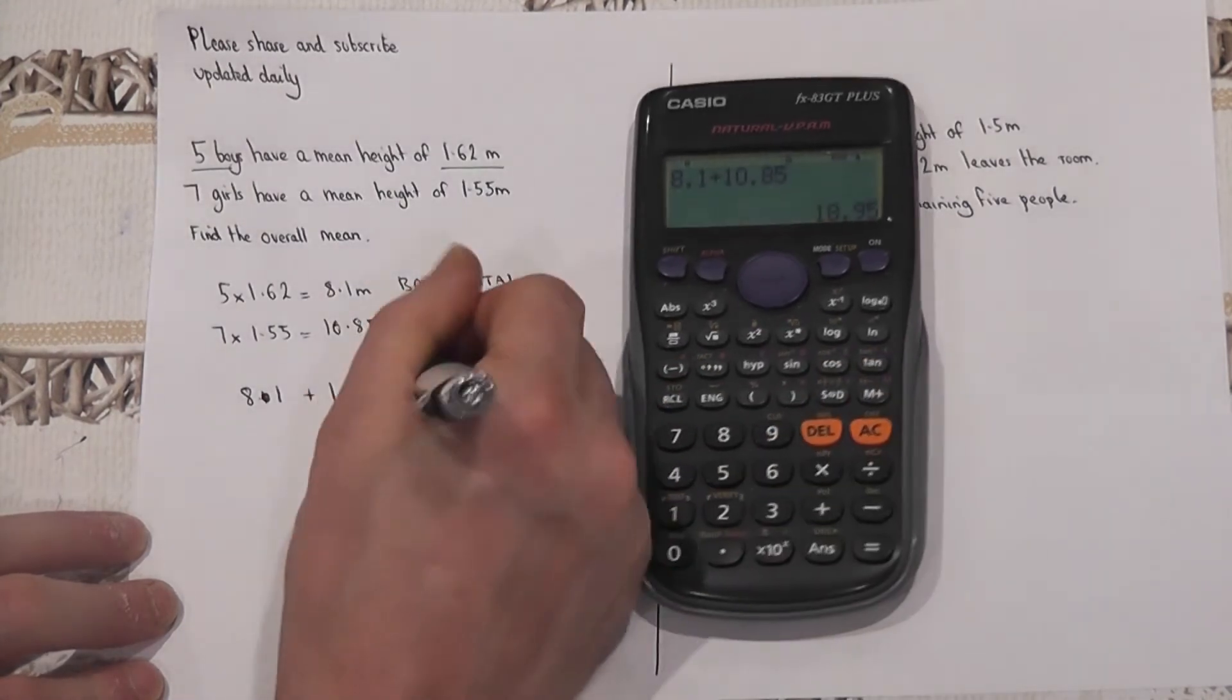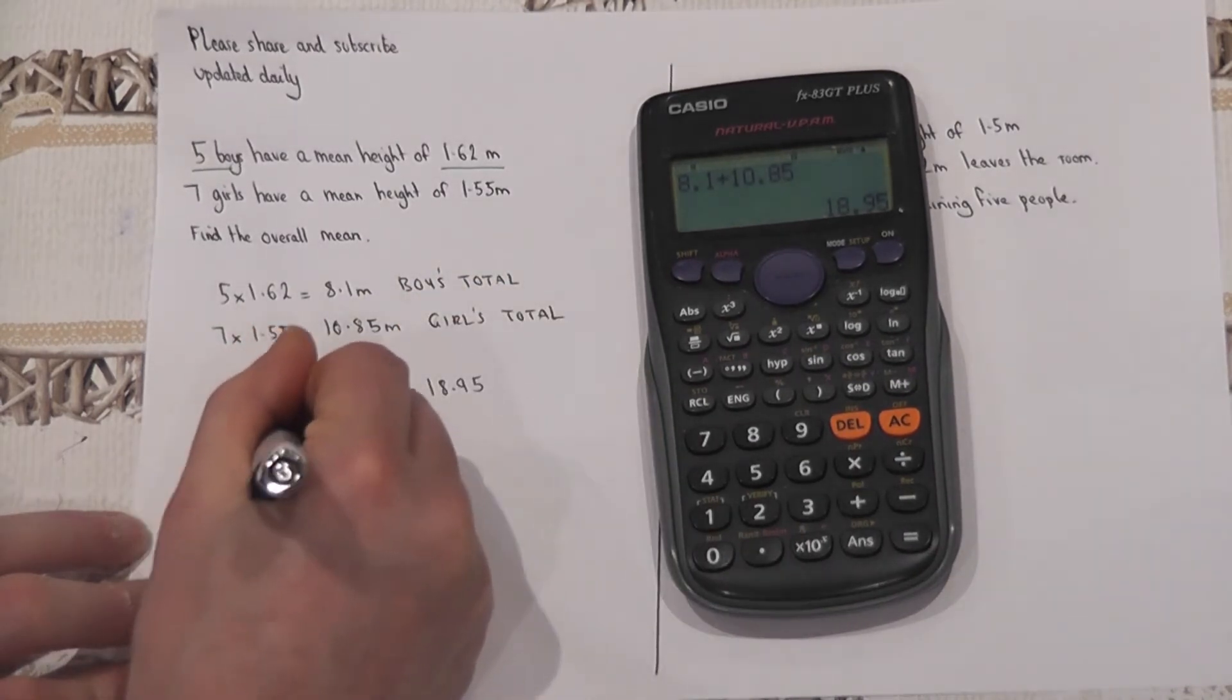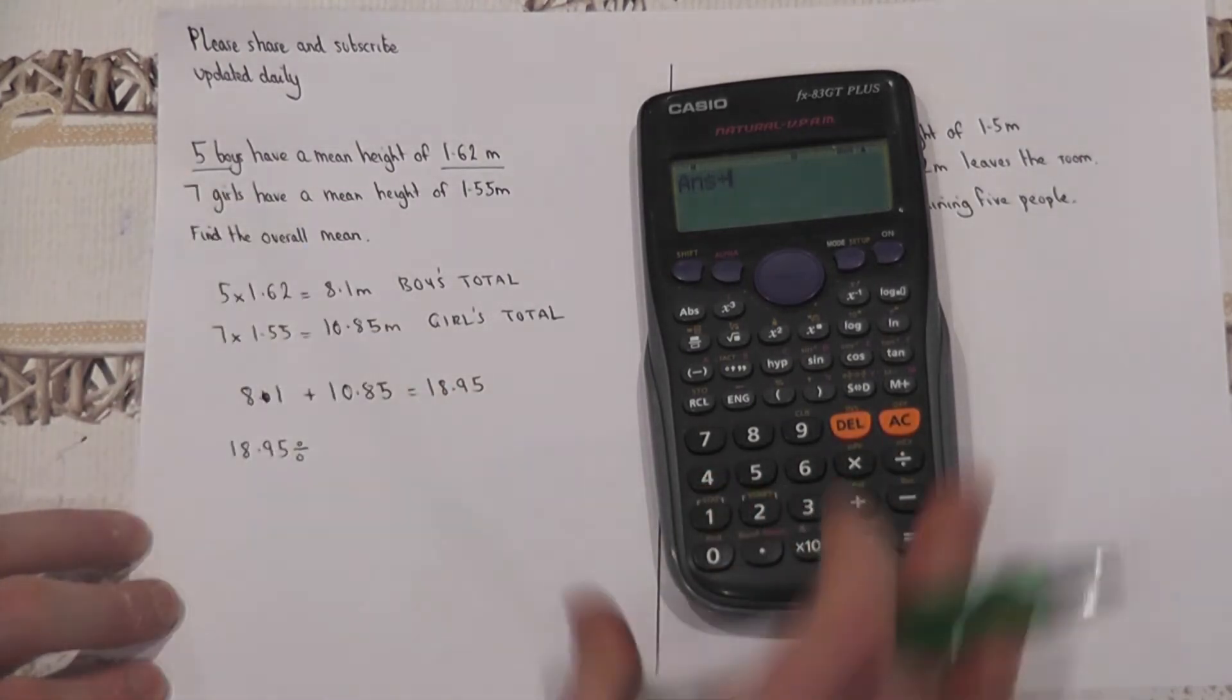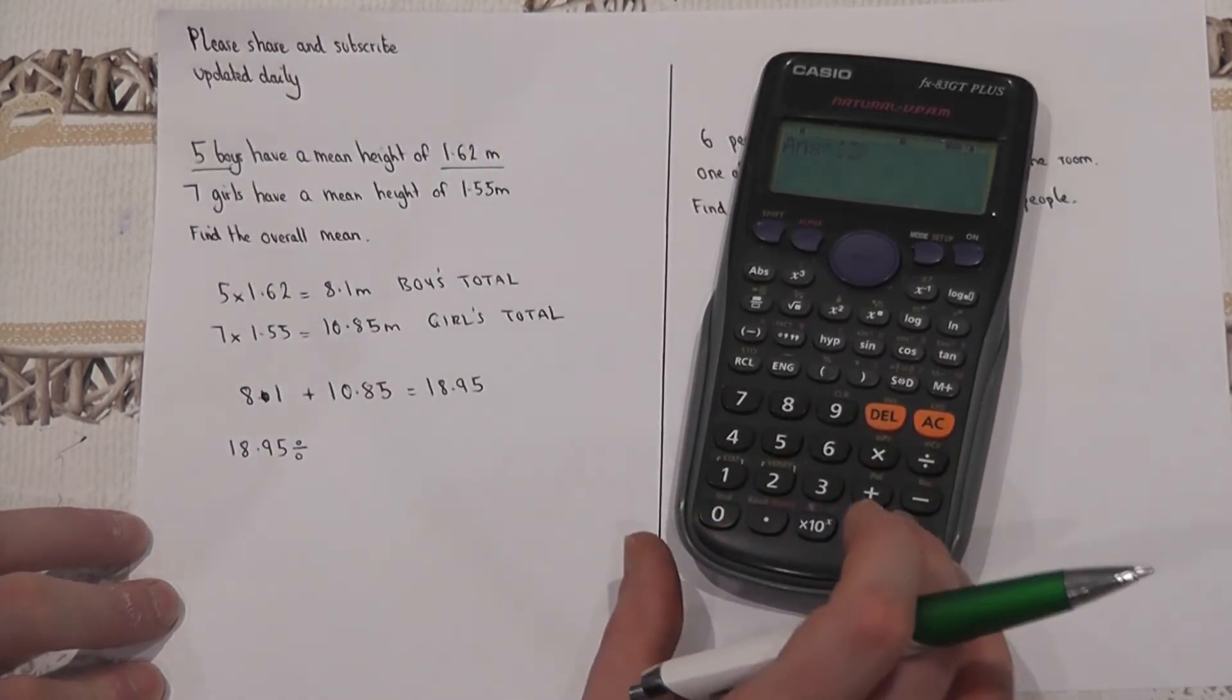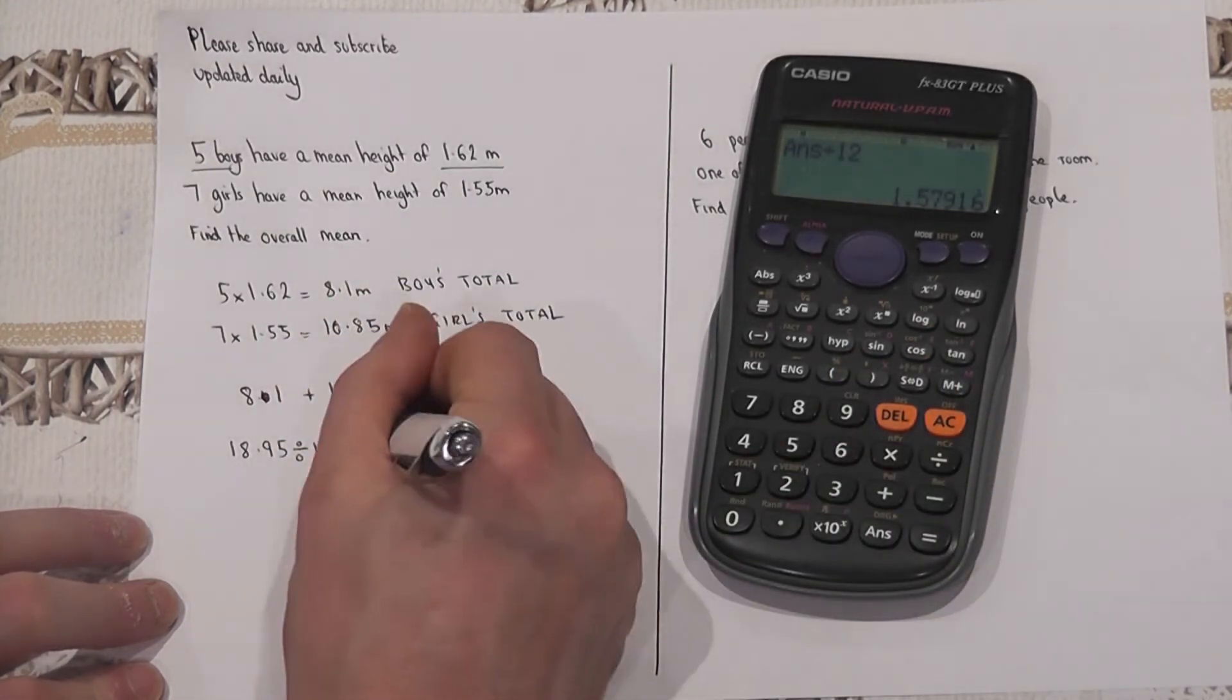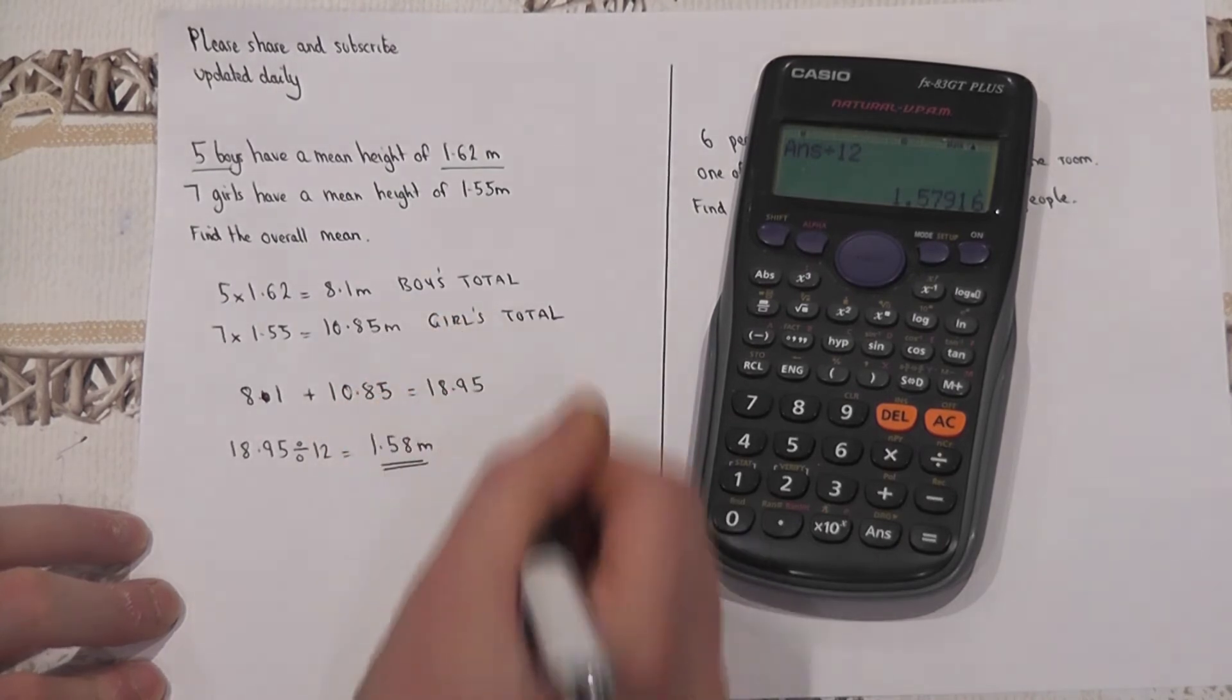However, to find the mean we then divide by the total number of people - five boys and seven girls. So the total divided by 12 gives me the combined overall mean, which equals 1.58 meters to two decimal places, or 1.58 to three significant figures.